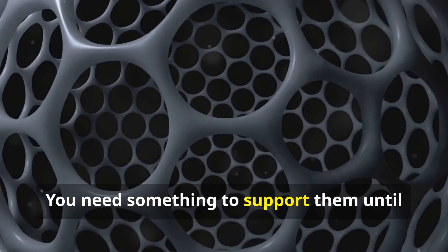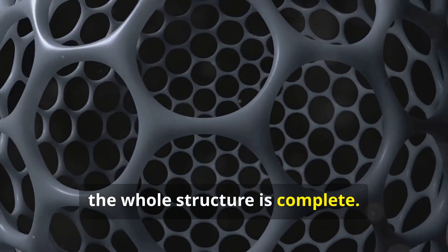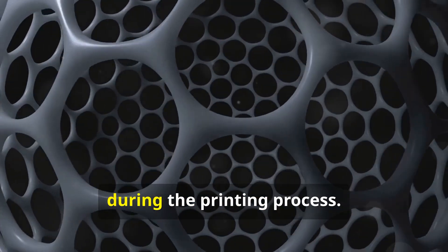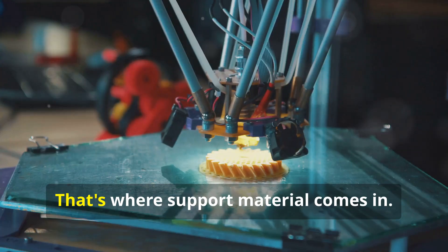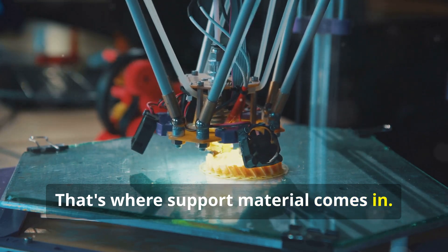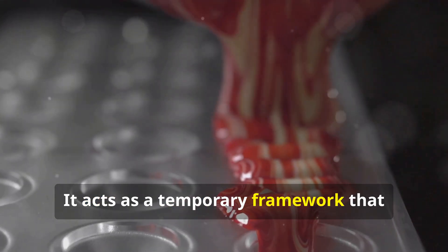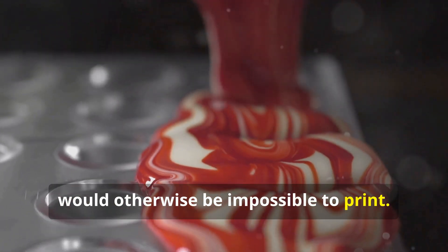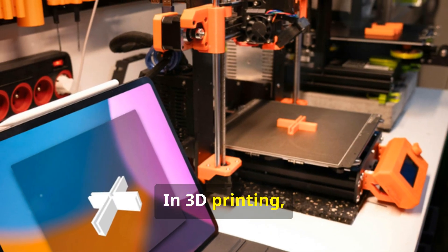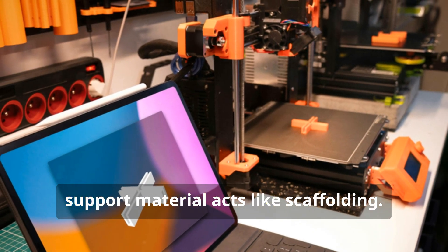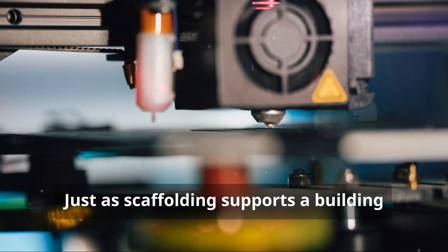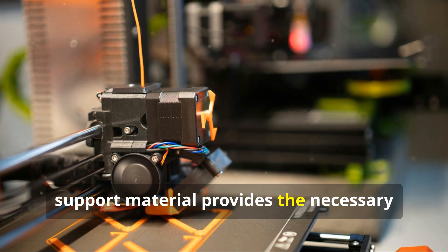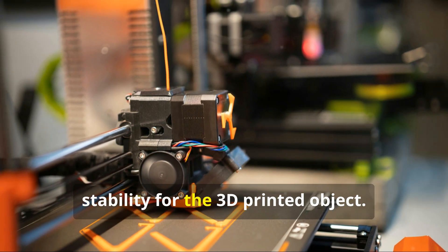You need something to support them until the whole structure is complete. These supports are crucial for maintaining the integrity of the design during the printing process. That's where support material comes in. It acts as a temporary framework that holds up the parts of the design that would otherwise be impossible to print. In 3D printing, support material acts like scaffolding. Just as scaffolding supports a building under construction, support material provides the necessary stability for the 3D printed object.